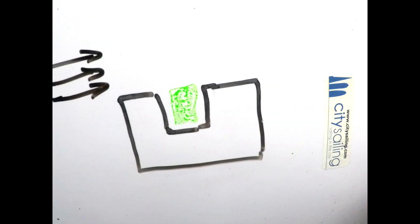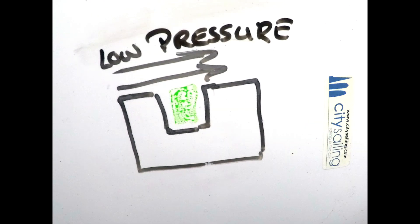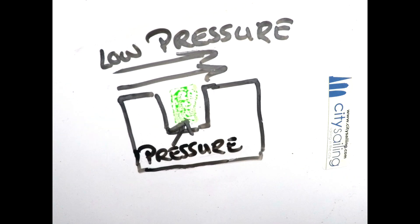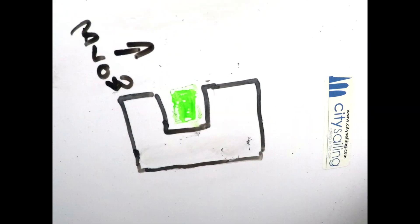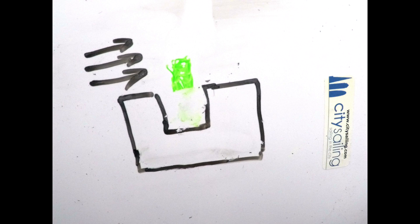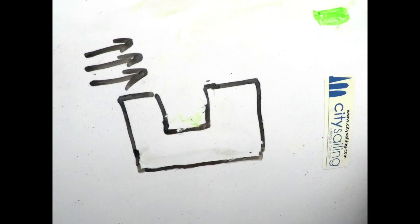Let's have a look at a little diagram. There's our cork — blow across the top, produces low pressure, and the cork pops out and flies away. This is due to the Bernoulli effect.